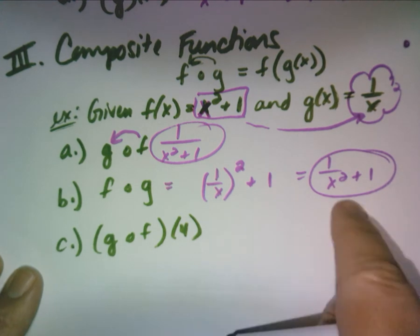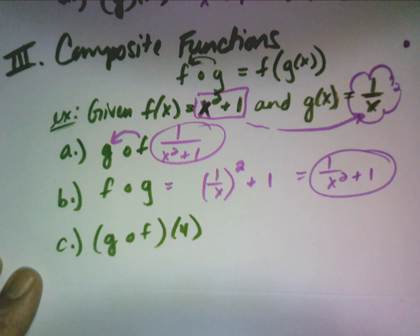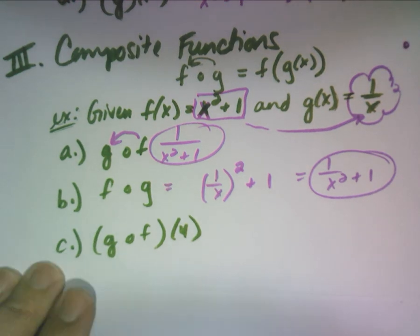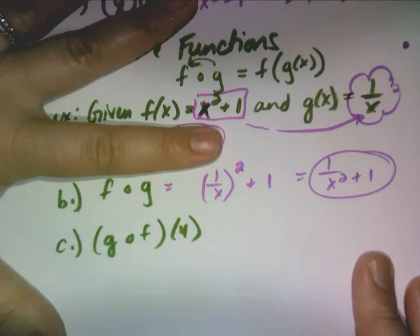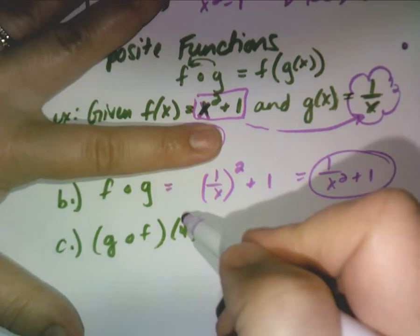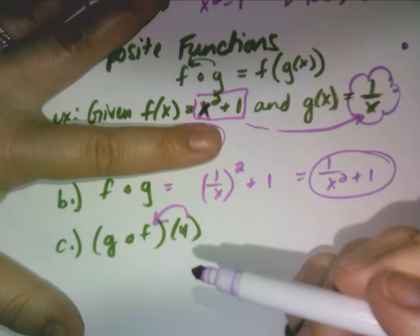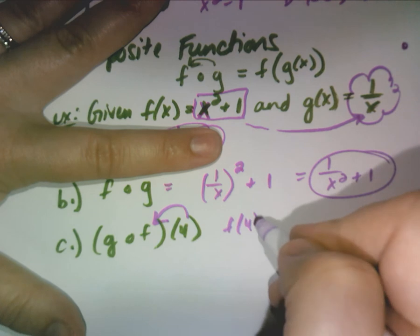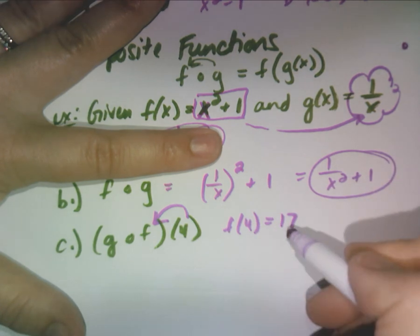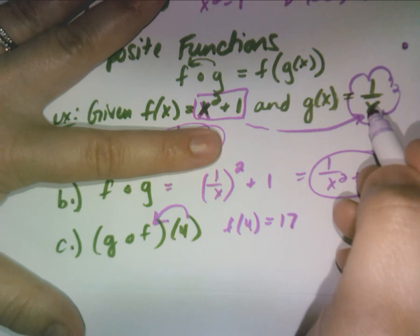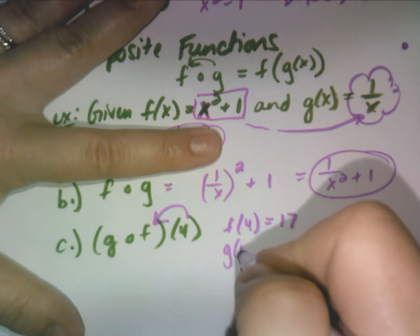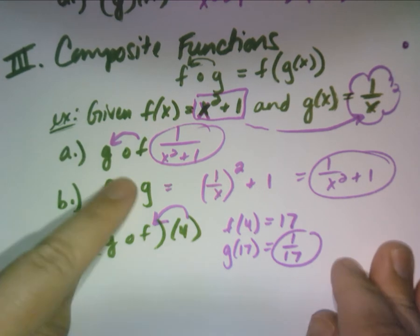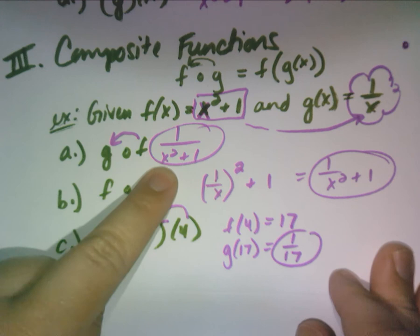What would gof(4) be? Here's what to do — even if you didn't find gof first: put 4 into f and get a number. f(4) = 4² + 1 = 17. Now take 17 and put it into g: g(17) = 1/17. That is the answer — that's gof(4). You could also have found gof first and then substituted 4 — you'd get the same answer.